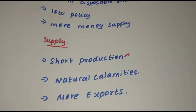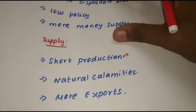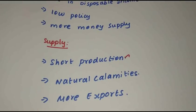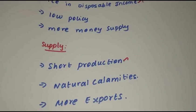Natural calamities can cause supply shortages and inflation. Money supply from banks should be controlled. More exports reduce domestic supply, increasing inflation. If profits are controlled, inflation will be less. We need to balance demand and supply. Disposable income and overall inflation will be less. Thank you very much.